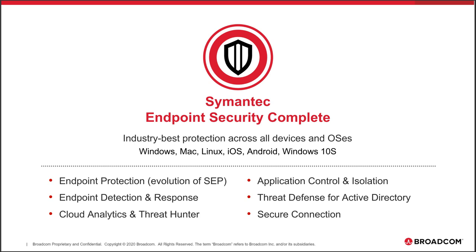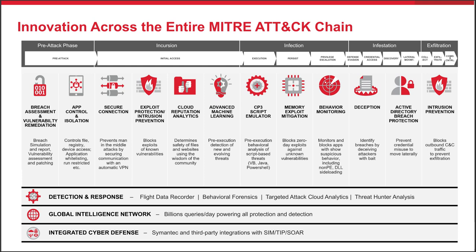Our last line of defense is our Threat Defense for Active Directory — looking at protecting the use of Active Directory in the enterprise and detecting any malicious or suspicious attempted use of credentials, since adversaries are looking to steal credentials and leverage them as they pivot or move laterally. As we look at the stack, we've overlaid it across the MITRE ATT&CK chain. The MITRE ATT&CK framework has 12 different tactics from ingress to egress, covering about 270-plus techniques that adversaries leverage as they compromise and conduct activities on enterprises.